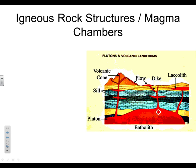There are four main types of magma chambers. We are going to start by drawing a picture of them. So flip over your note sheet, find a spot, label it igneous rock structures slash magma chambers, and then we're going to start drawing the picture.